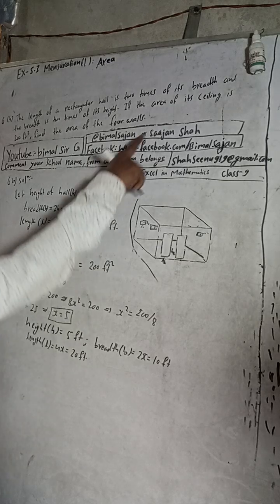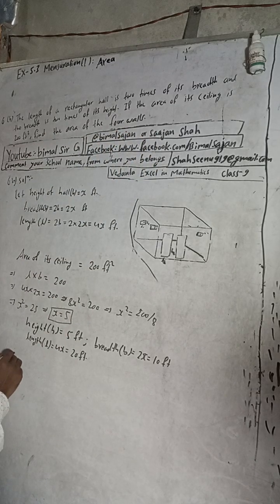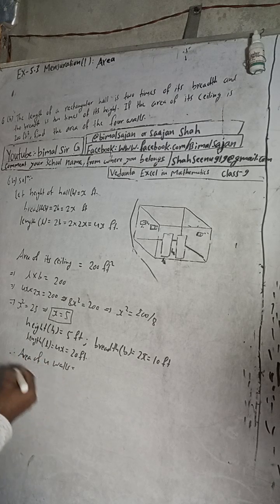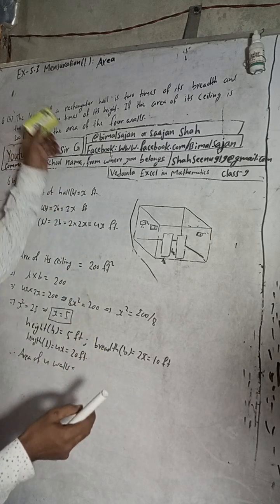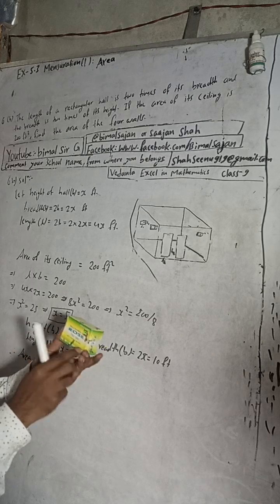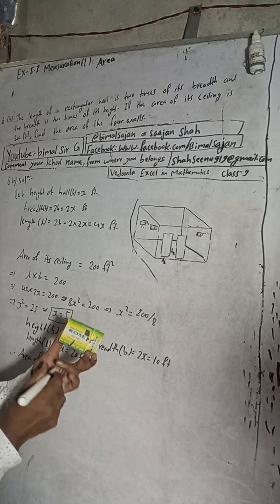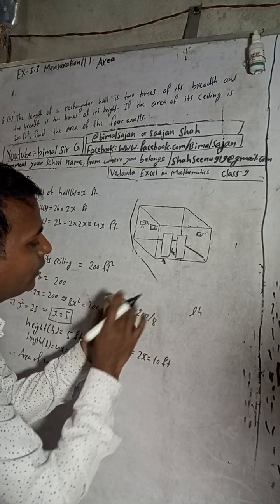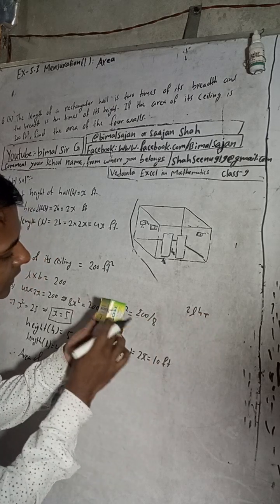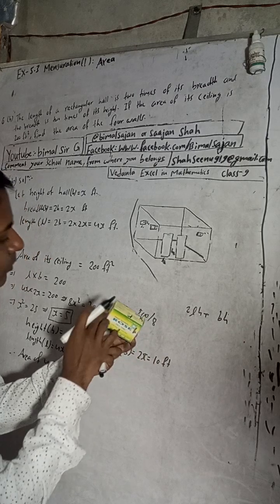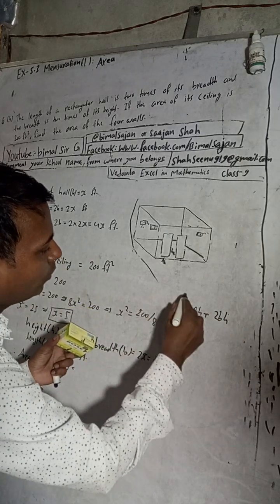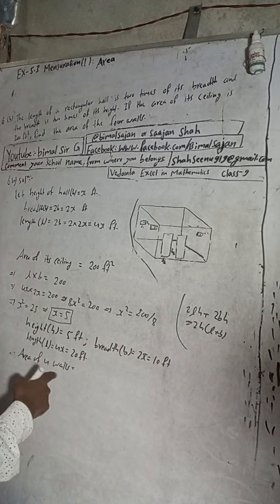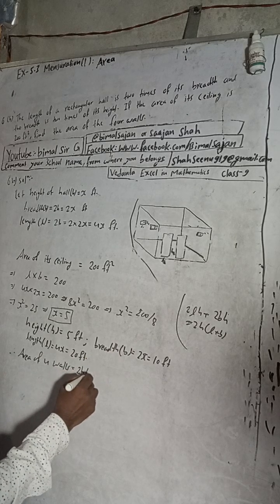Now we can find the area of the four walls. The formula for the area of four walls: suppose this is our hall — for each lengthwise wall the area is L times H, and there are two such walls giving 2LH. For the breadthwise walls the area is B times H, giving 2BH. Taking 2H as common, the formula becomes 2H times (L + B).